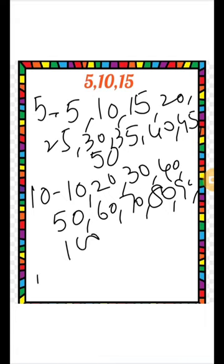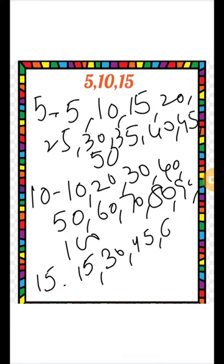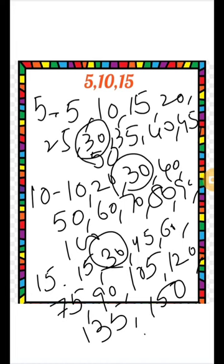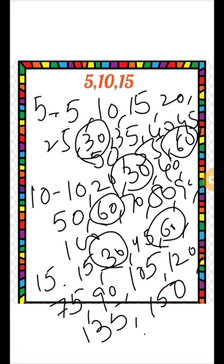Now write the multiples of 15: 15, 30, 45, 60, 75, 90, 105, 120, 135, 150. Find the common multiples: 30 and 60. Your least common multiple is 30, so the LCM is 30.